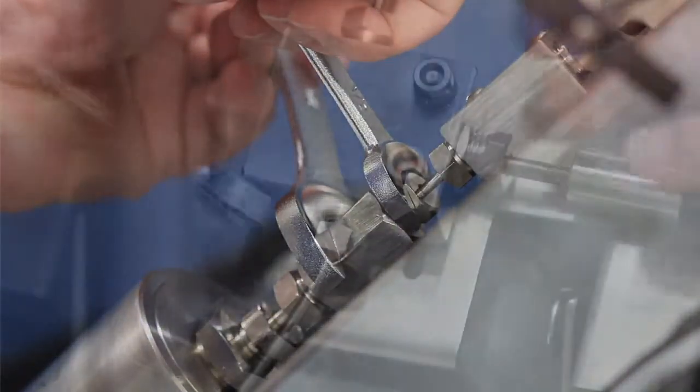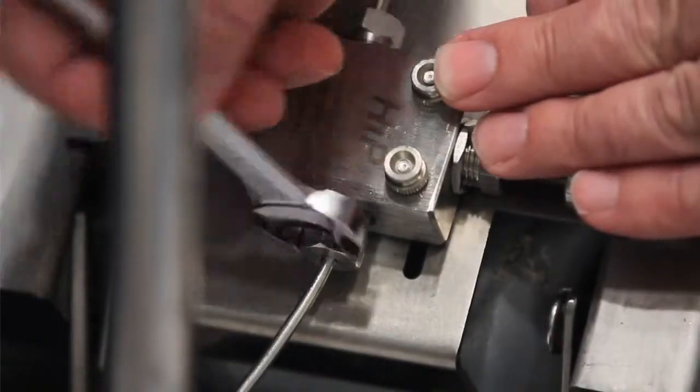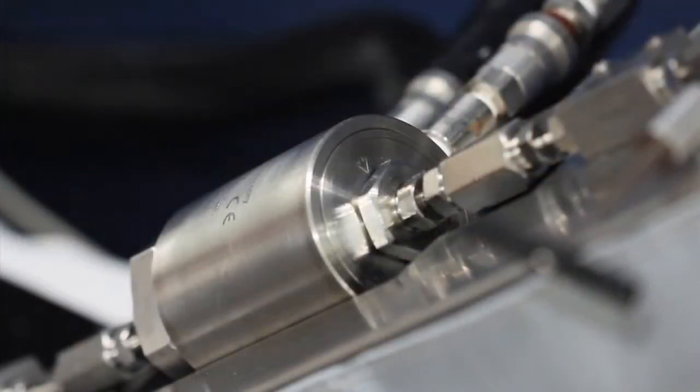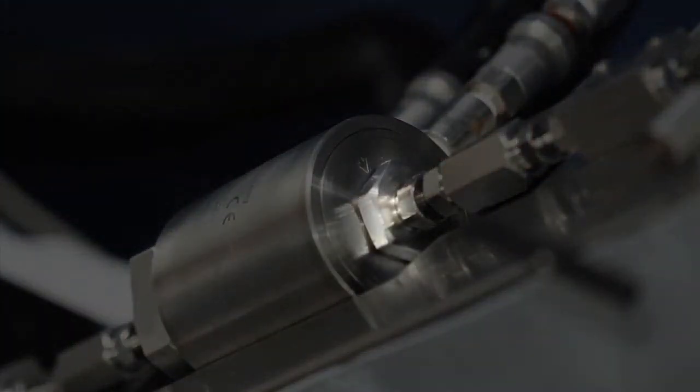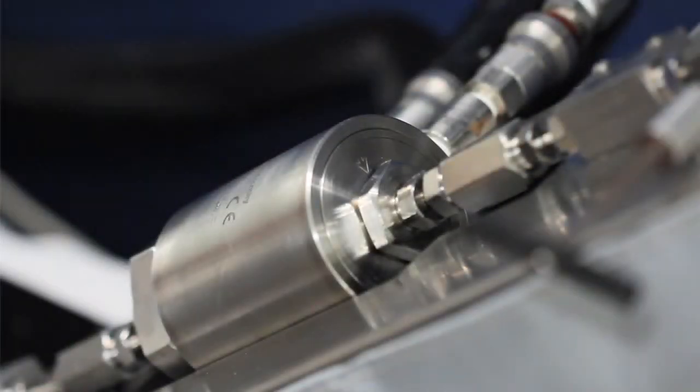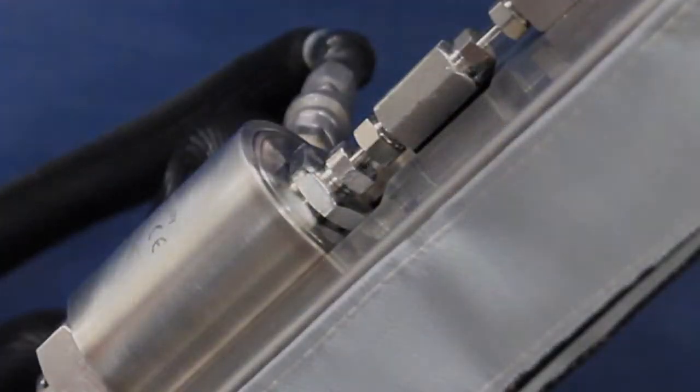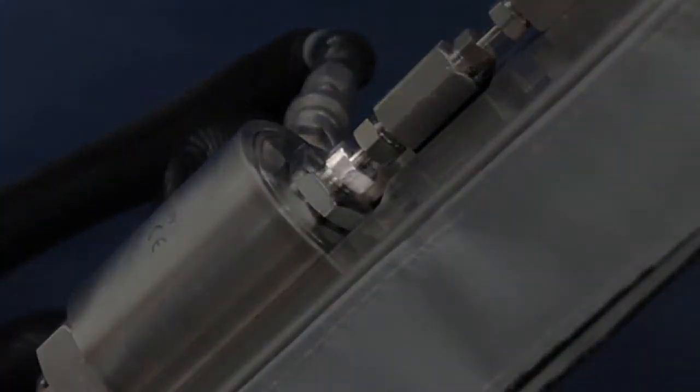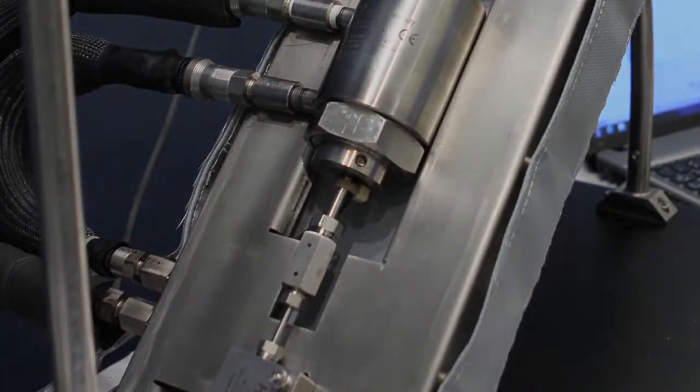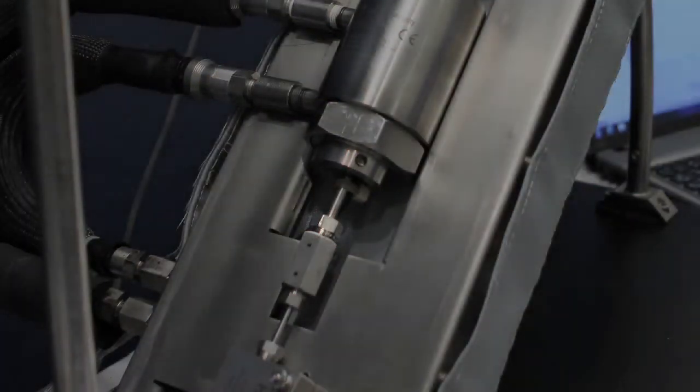If pressure continues to drop, check all of the fittings for leaks. The large gland nut should be torqued to 110 foot-pounds. The low torque nut should be torqued to 65 foot-pounds. The rest of the nuts should be torqued to 25 foot-pounds.